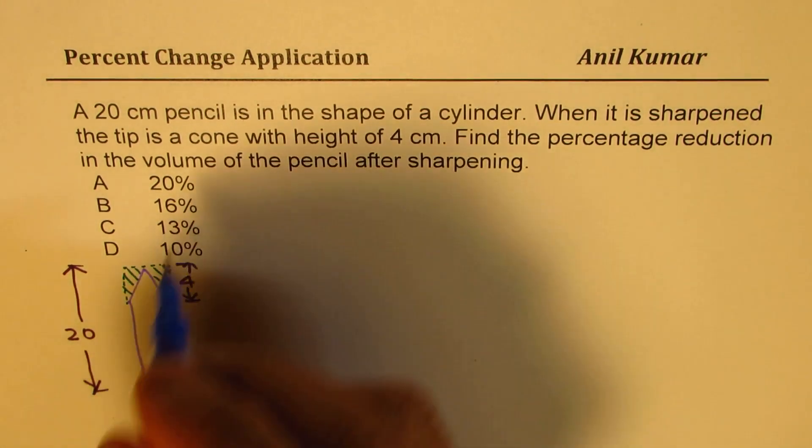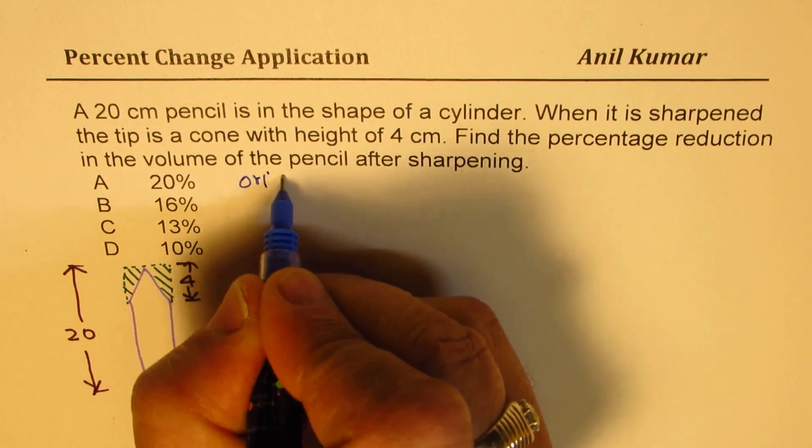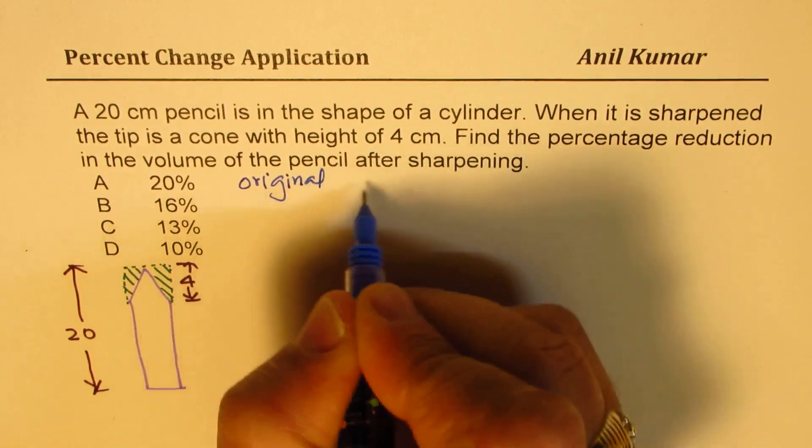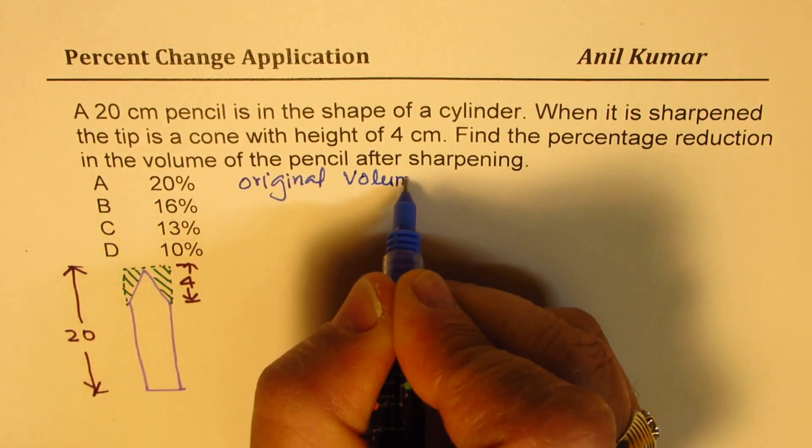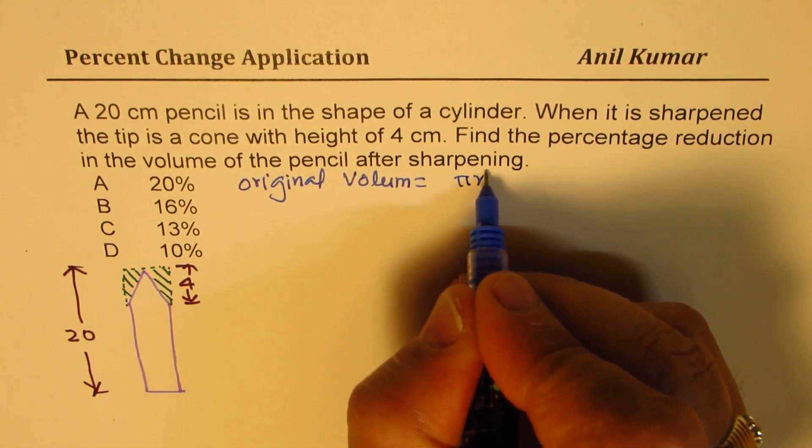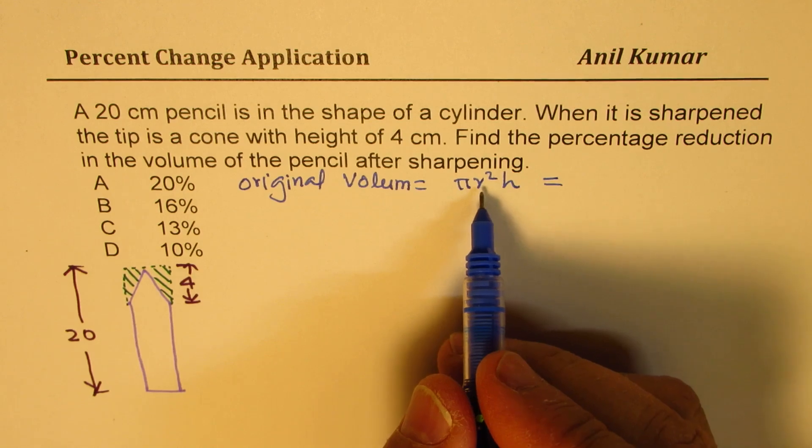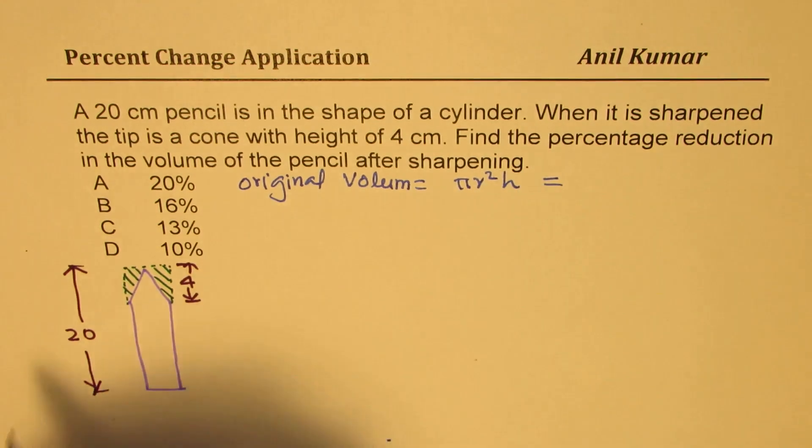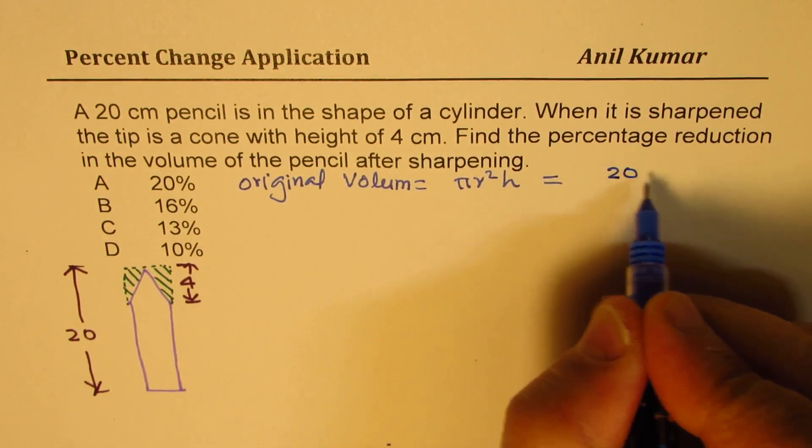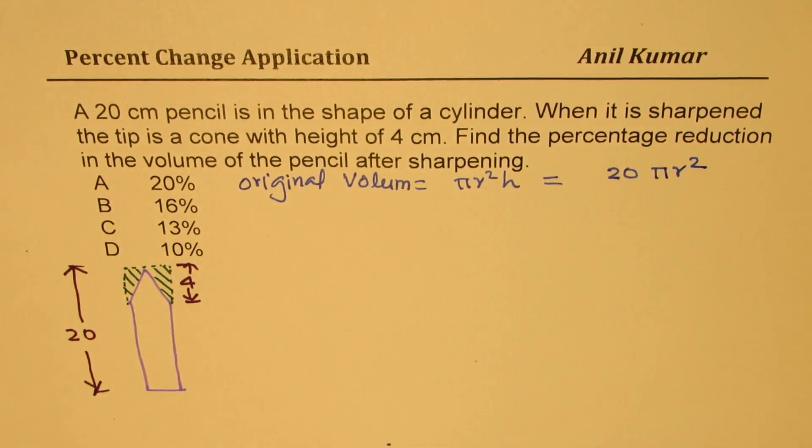Now, what is the original volume? It is a cylinder, so it is πr²h. In this case, r doesn't really make a difference. Height is 20, so we can write this as 20πr².